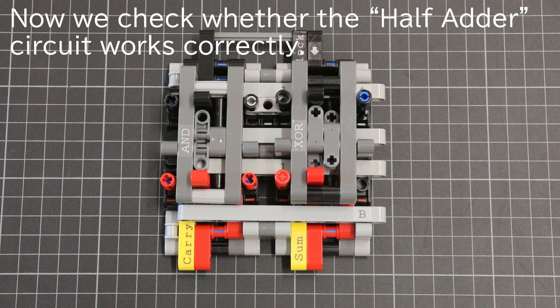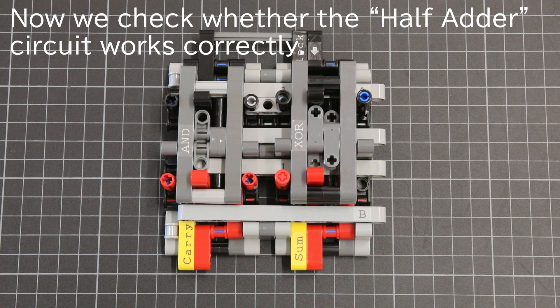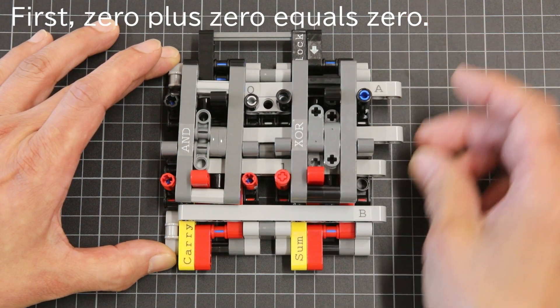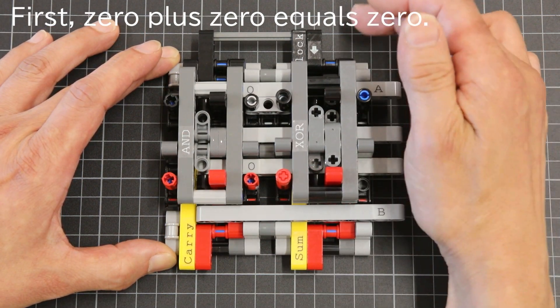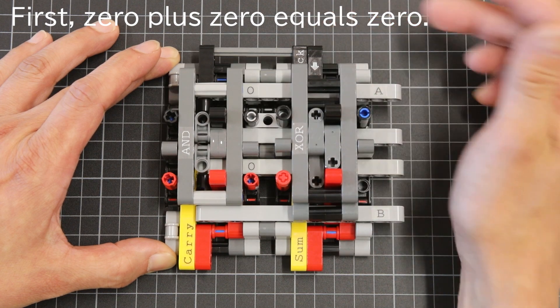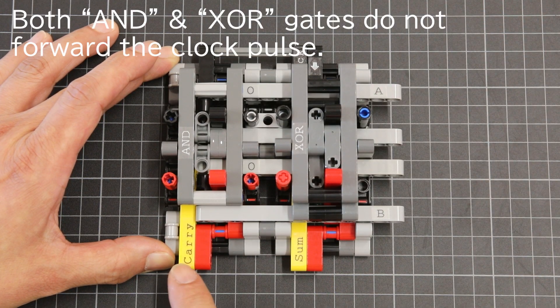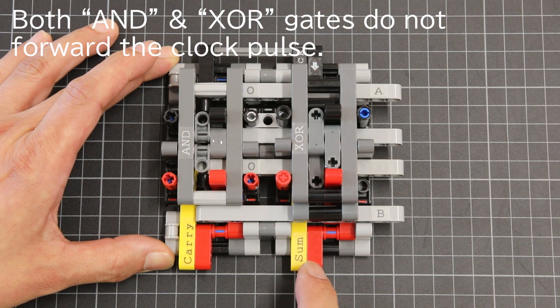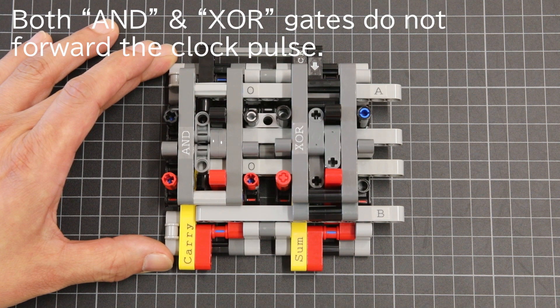Now we check whether the half-adder circuit works correctly. First, 0 plus 0 equals 0. Both AND and exclusive OR gates do not forward the clock pulse.